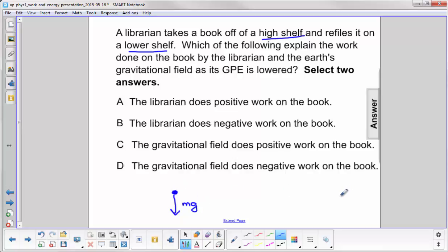Now the librarian is holding the book even as she lowers it or he lowers it. The librarian is exerting a force in the upward direction to prevent the book from falling through the librarian's hand. So the force is always up.